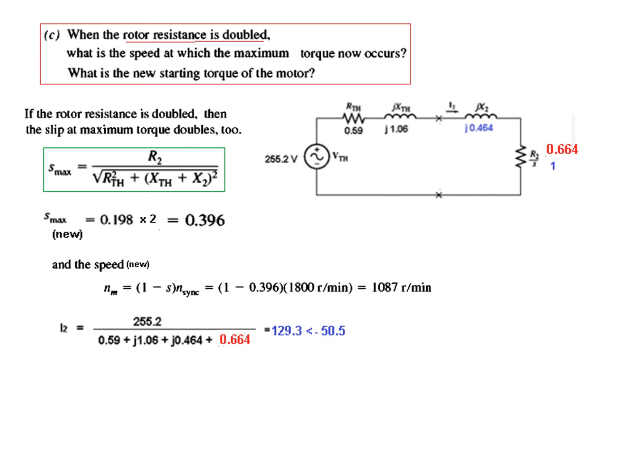To find the starting torque with doubled resistance, we calculate the current by putting in this new resistance value, giving the new current. P_AG is calculated by plugging in the values, giving the air gap power for starting. T_start is 176 Newton meters. In the book it is about 170. This is how you solve it.